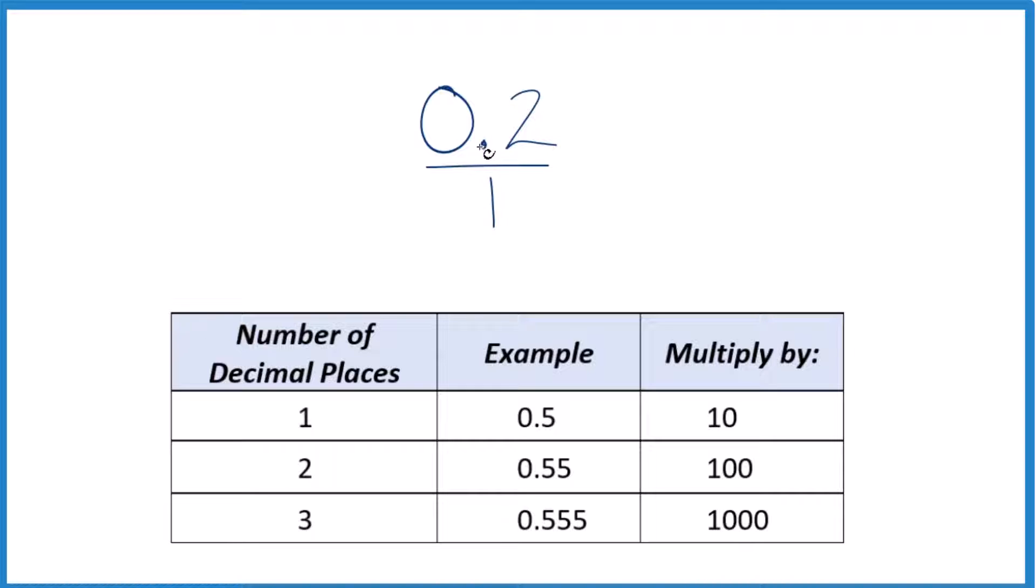We have this decimal here, so we'd like this to be a whole number. The way we can do that is if we multiply it by 10. 10 times 0.2, or 0.20, that gives us 2. So there's our whole number.